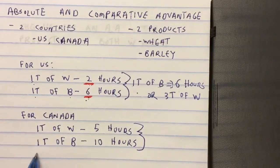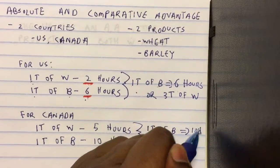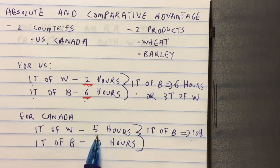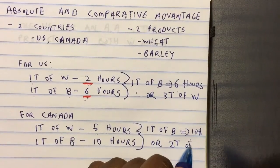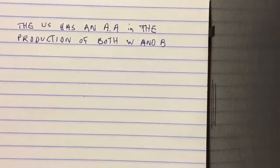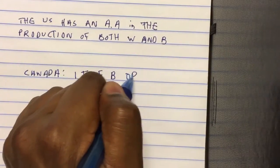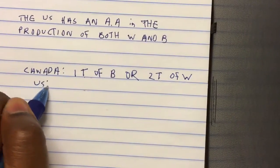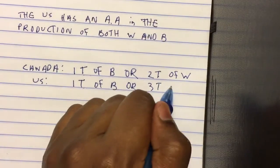If we look at Canada, if I give up one ton of barley in Canada, I free up ten hours. Since one ton of wheat requires five hours, in ten hours Canada can produce two tons of wheat. So Canada's opportunity cost is one ton of barley equals two tons of wheat, and for the US it is one ton of barley equals three tons of wheat.